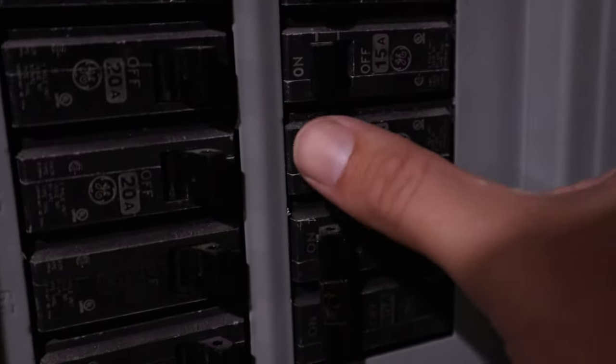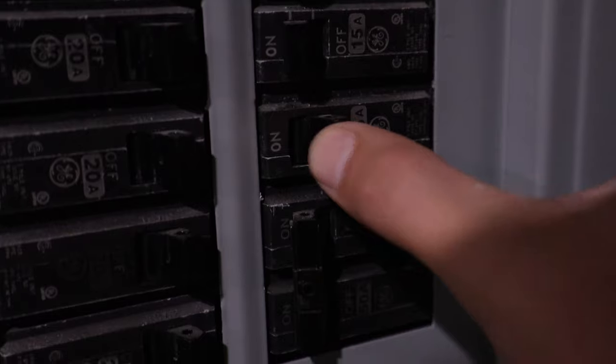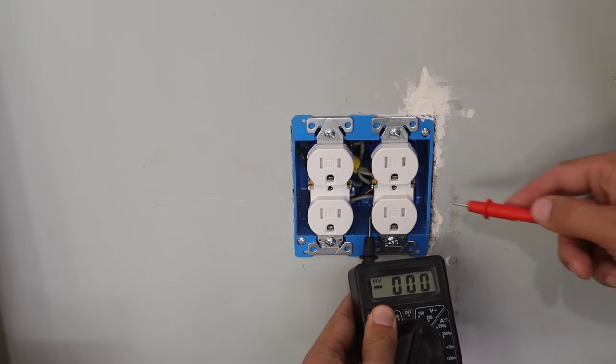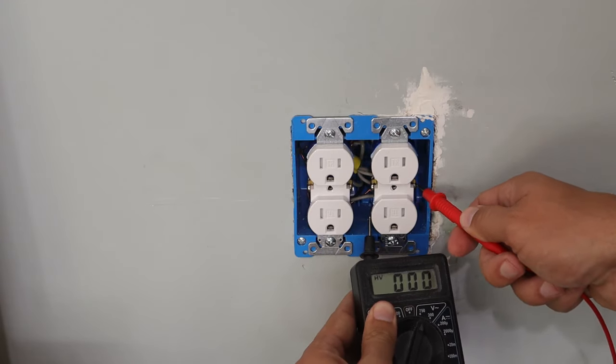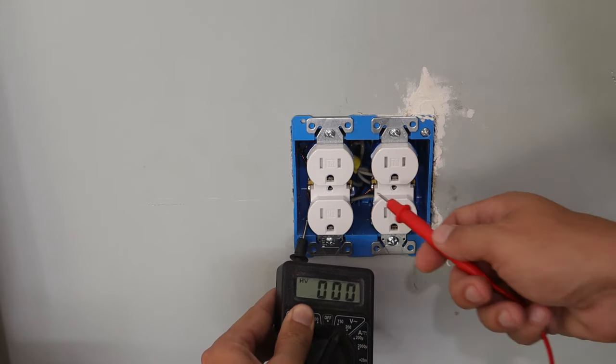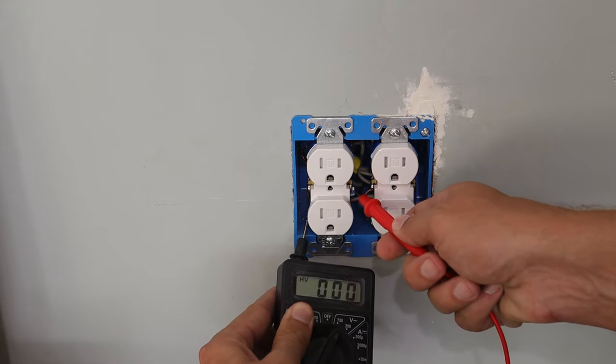First we're going to locate the circuit breaker that's supplying power to the outlets we'll be connecting to and turn it off. Now that the circuit breaker is off, I can remove the cover plate and check the terminals on each of the outlets to make sure there is no power going to them.